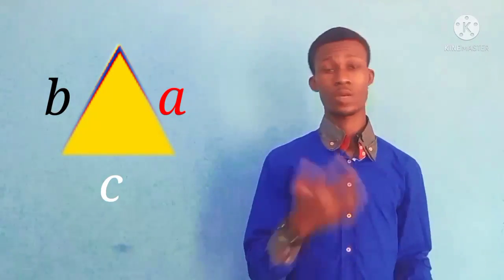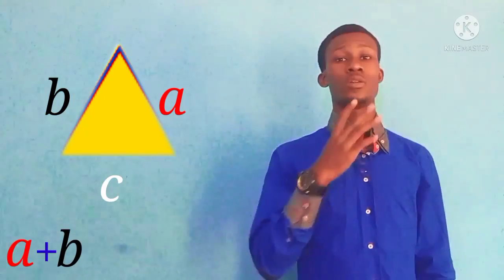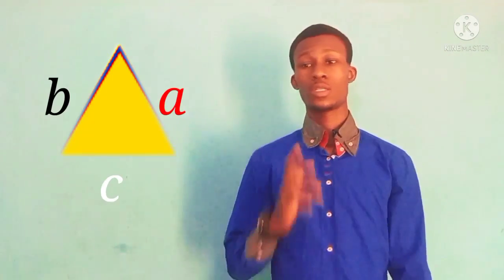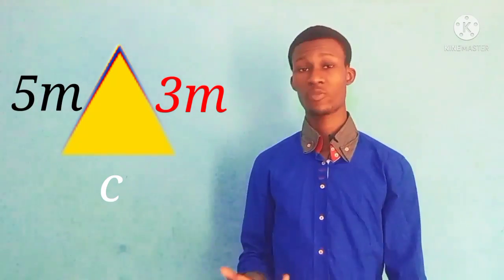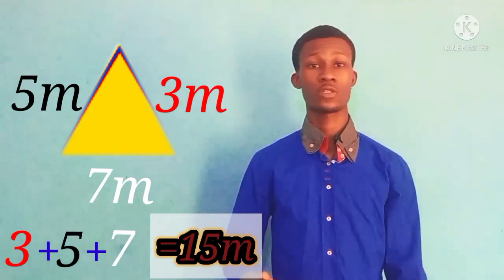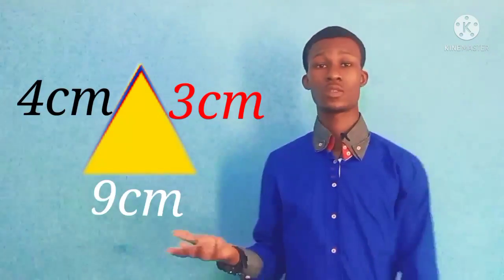Now let us move over to solving the perimeter of a triangle. The formula for finding the perimeter of a triangle is simply the addition of all three sides: length plus breadth plus height. For example, if one side is 3 meters, another is 5 meters, and the last is 7 meters, all you do is 3 plus 5 is 8, and 8 plus 7 is 15. So the perimeter is 15 meters.